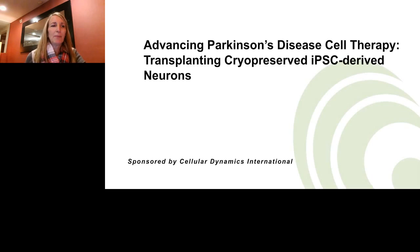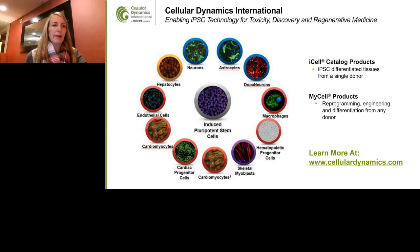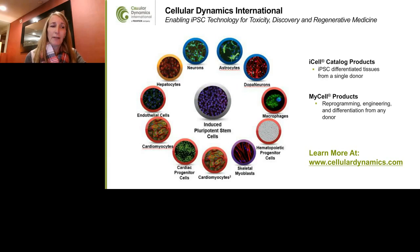Cellular Dynamics International is a Fujifilm company and is the world's largest producer of human iPS cells and human iPS cell-derived cell types. Their growing product offering includes the iCell products — cells differentiated from healthy donors such as the iCell neurons and iCell cardiomyocytes — and the myCell products that provide reprogramming, genetic engineering, and differentiation services from your choice of patient samples.